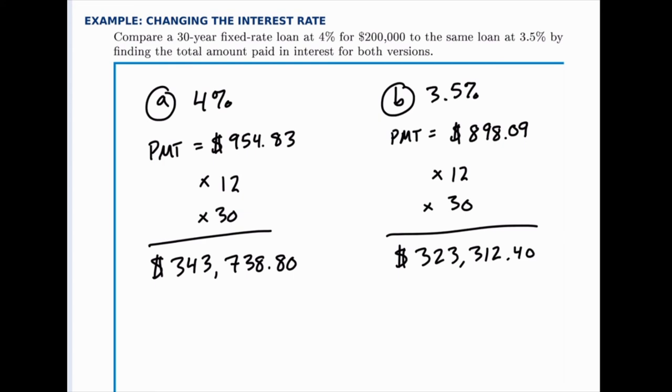Once we know the total amount that we paid, we know that we started by loaning $200,000, so we're paying that back plus interest. Once we know the total amount paid, if we remove the $200,000 that we're paying back in principal, the remainder is the interest. In both cases we can subtract $200,000, and this calculation is pretty easy to do since it's a nice round number.